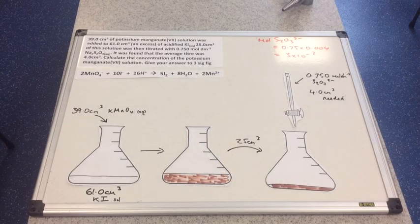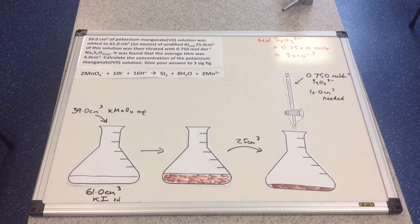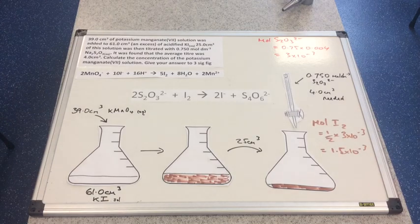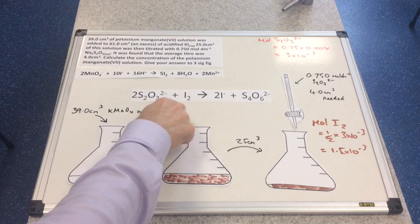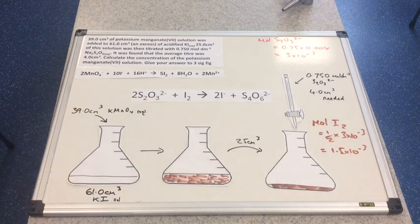Moles of thiosulfate first: 0.75 concentration multiplied by 0.004 dm³ gives 3 × 10⁻³ mol of thiosulfate. Moles of iodine is half the moles of thiosulfate — we can see the equation on the board — so that's 1.5 × 10⁻³ mol of iodine.